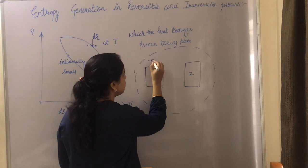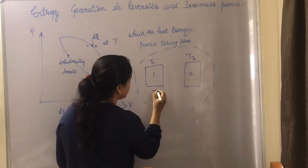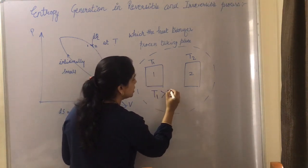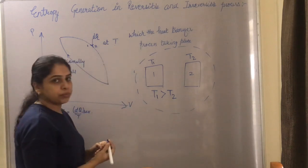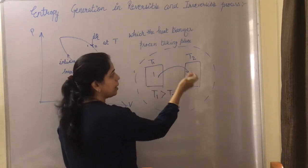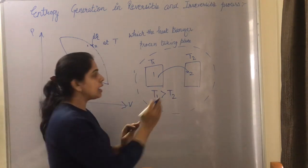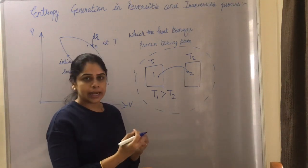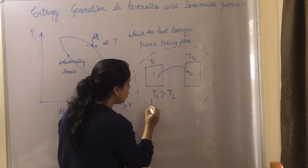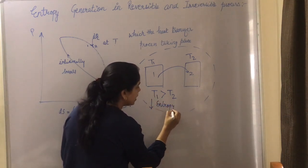The temperature of body 1 is T1 and the temperature of body 2 is T2, where T1 is greater than T2. So heat is being transferred from the higher temperature body 1 to the lower temperature body 2. Body 1 is losing heat and body 2 is gaining heat.